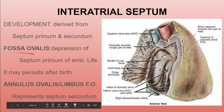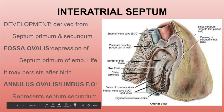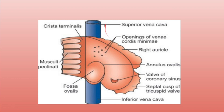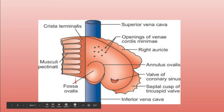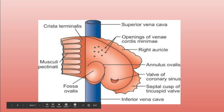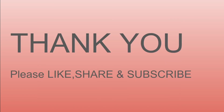To summarize: the fossa ovalis is derived from the septum primum, and the annulus ovalis is derived from the septum secundum. The exam diagram covers the crista terminalis running from the superior vena cava to the inferior vena cava, musculi pectinati, fossa ovalis, annulus fossa ovalis, opening of vena cordis minimis, superior and inferior vena cava, tricuspid valve, Thebesian valve of the coronary sinus, and the right auricle. That concludes the topic of the right atrium — thank you.